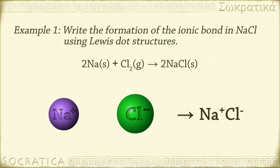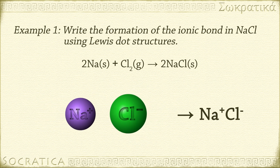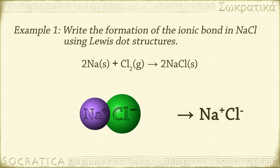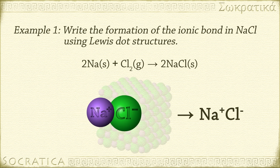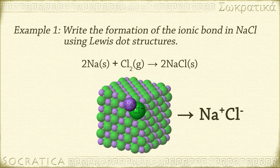The oppositely charged ions, which are strongly attracted to each other, arrange to form a lattice in three dimensions, where each sodium ion is surrounded by six chloride ions, and each chloride ion is surrounded by six sodium ions.